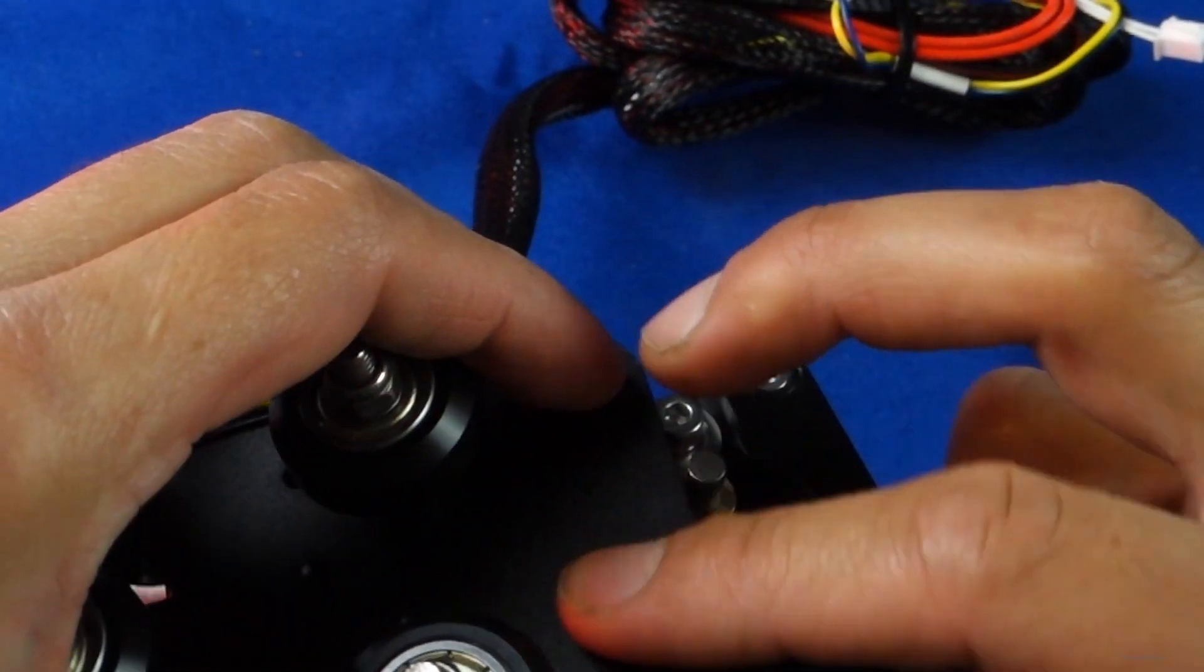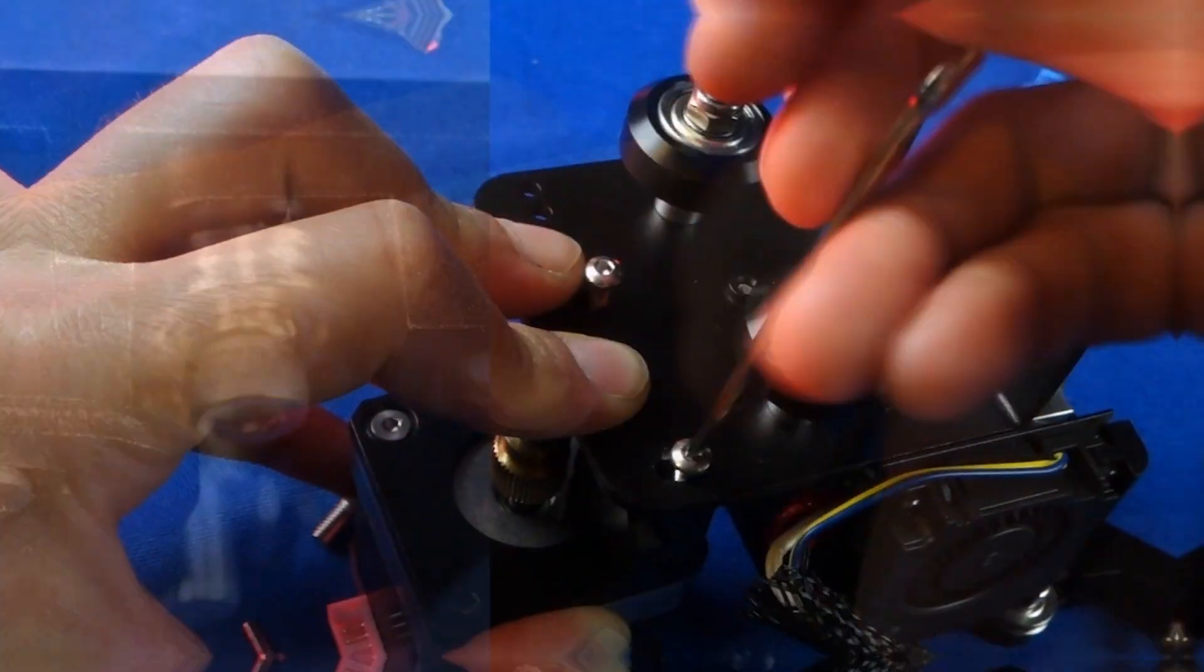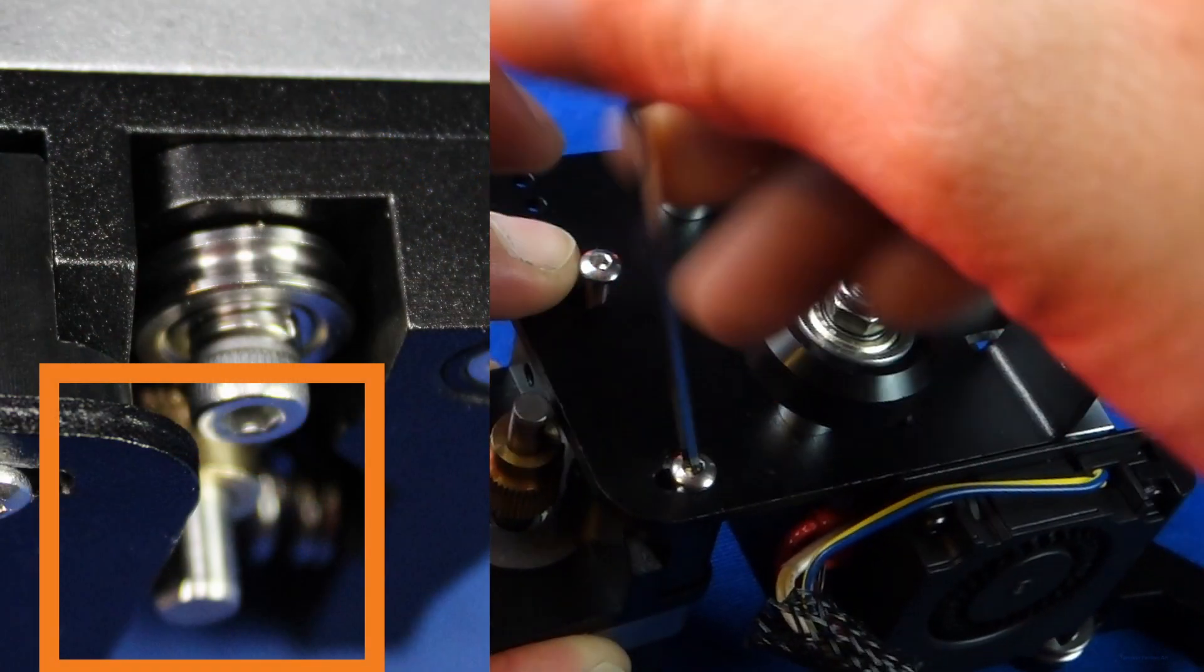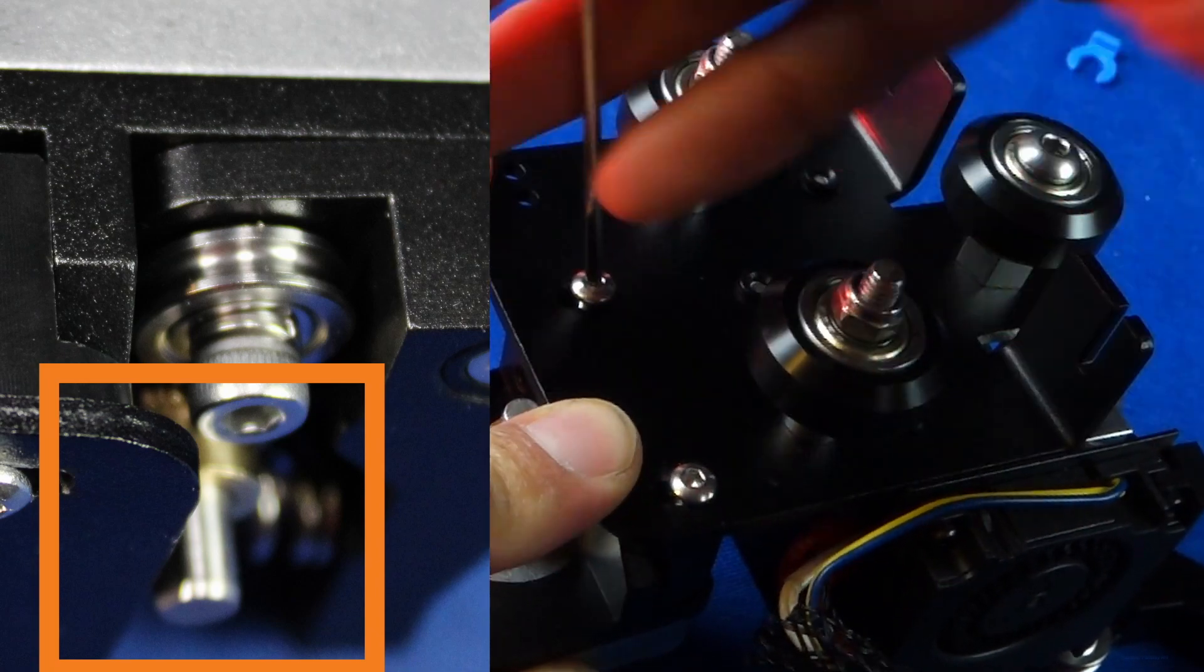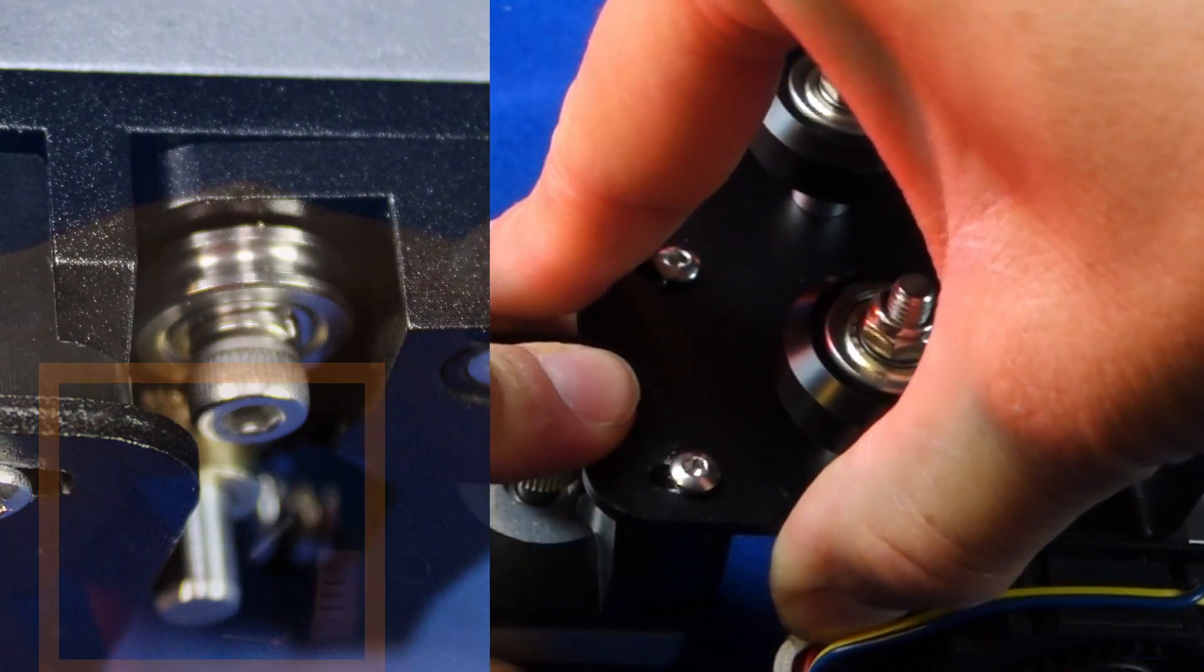When reattaching the extruder feeder to the bracket you will find that it is a bit finicky, however it should fit as long as you line everything up properly while tightening the screws. Make sure that the motor shaft has enough space, otherwise its movement will be hindered.